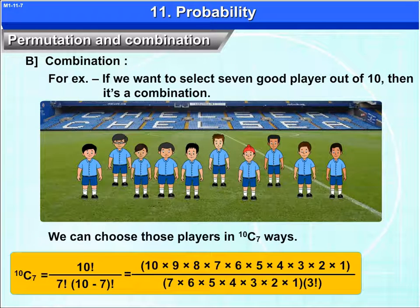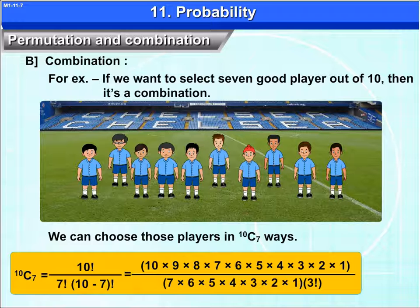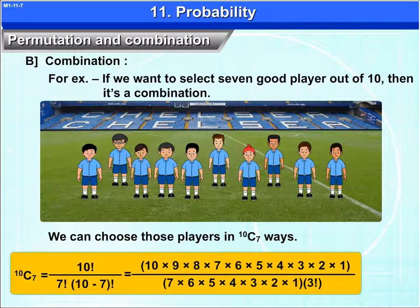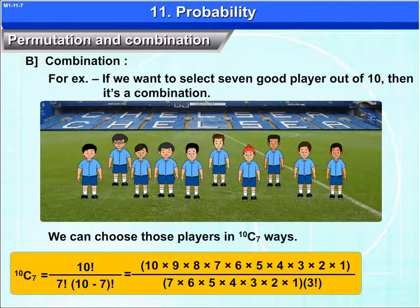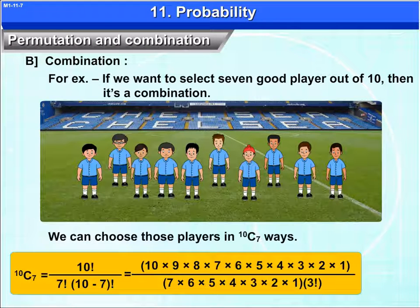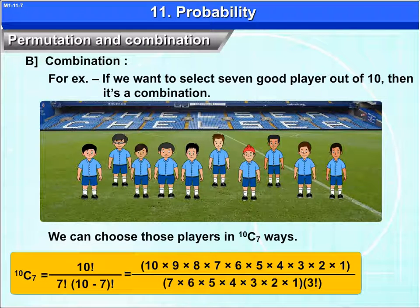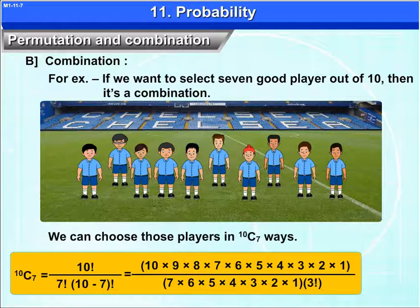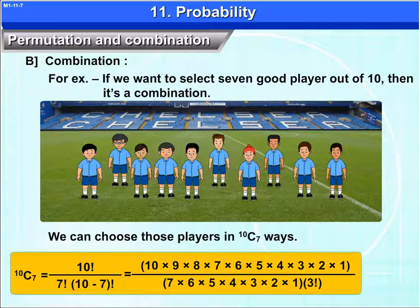10C7 is equal to 10 factorial upon 7 factorial into 10 minus 7 factorial. That equals 10 into 9 into 8 into 7 into 6 into 5 into 4 into 3 into 2 into 1 upon 7 into 6 into 5 into 4 into 3 into 2 into 1 into 3 factorial.